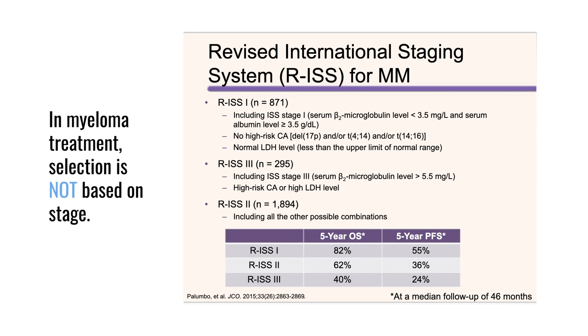Myeloma does not behave that way. In fact, myeloma has three different staging systems, but they all go 1 to 3. In general, that is not the better way we describe patients because we don't treat someone with stage 1 differently from stage 3. In our mind, we define myeloma as being standard risk or high risk.